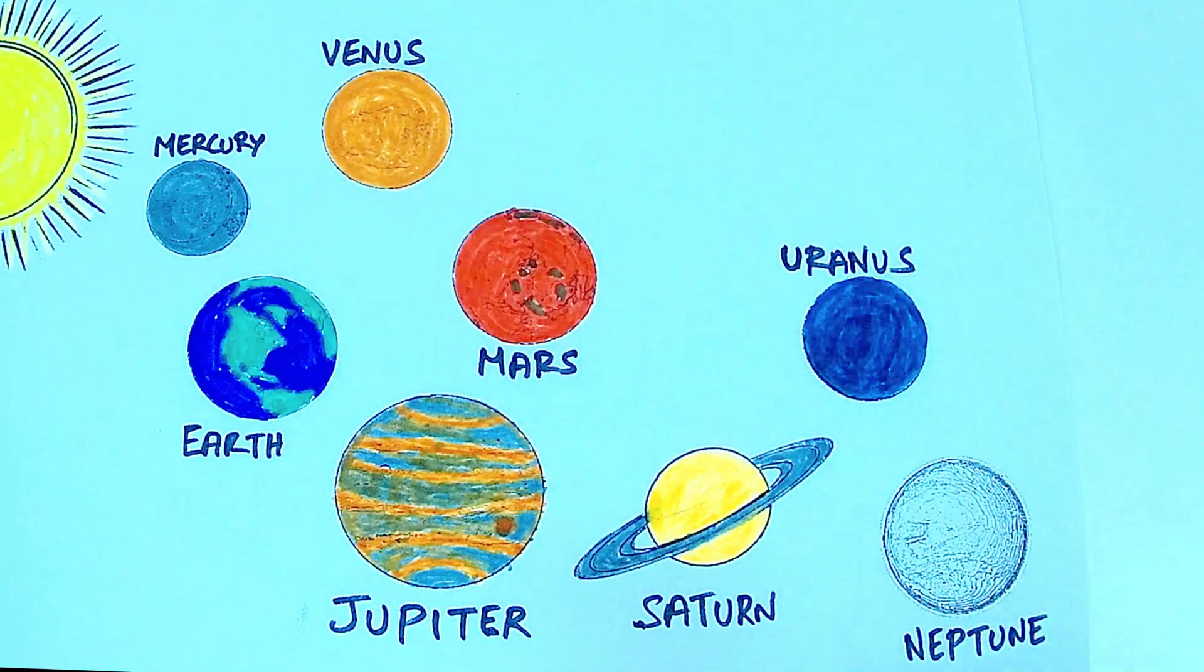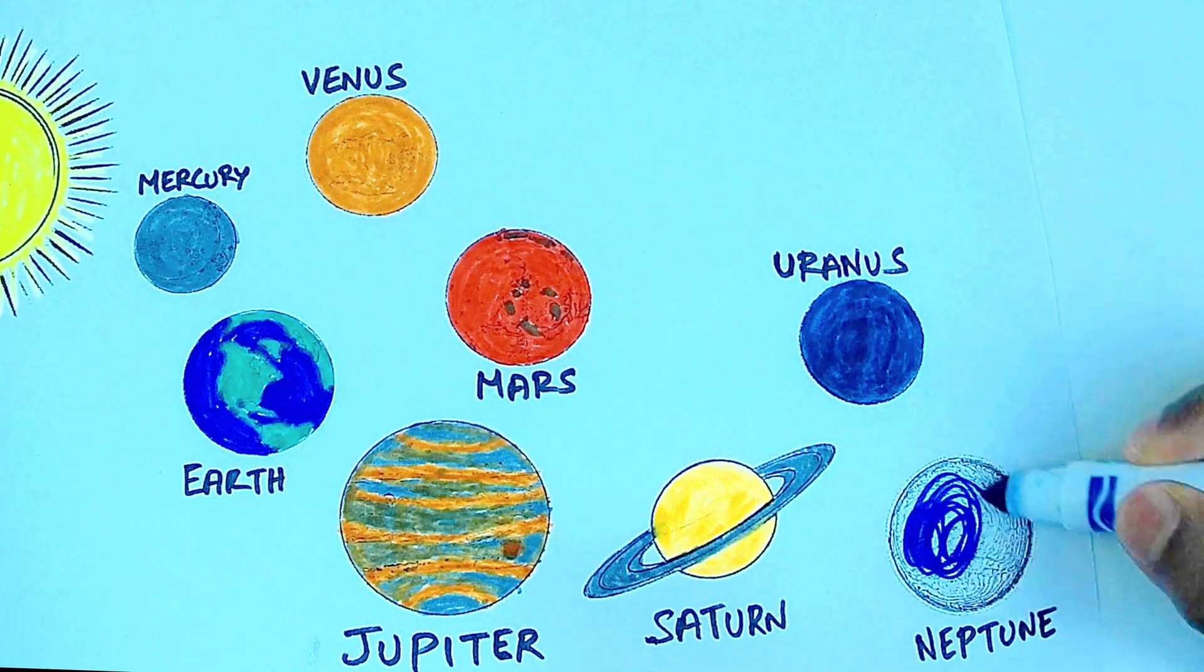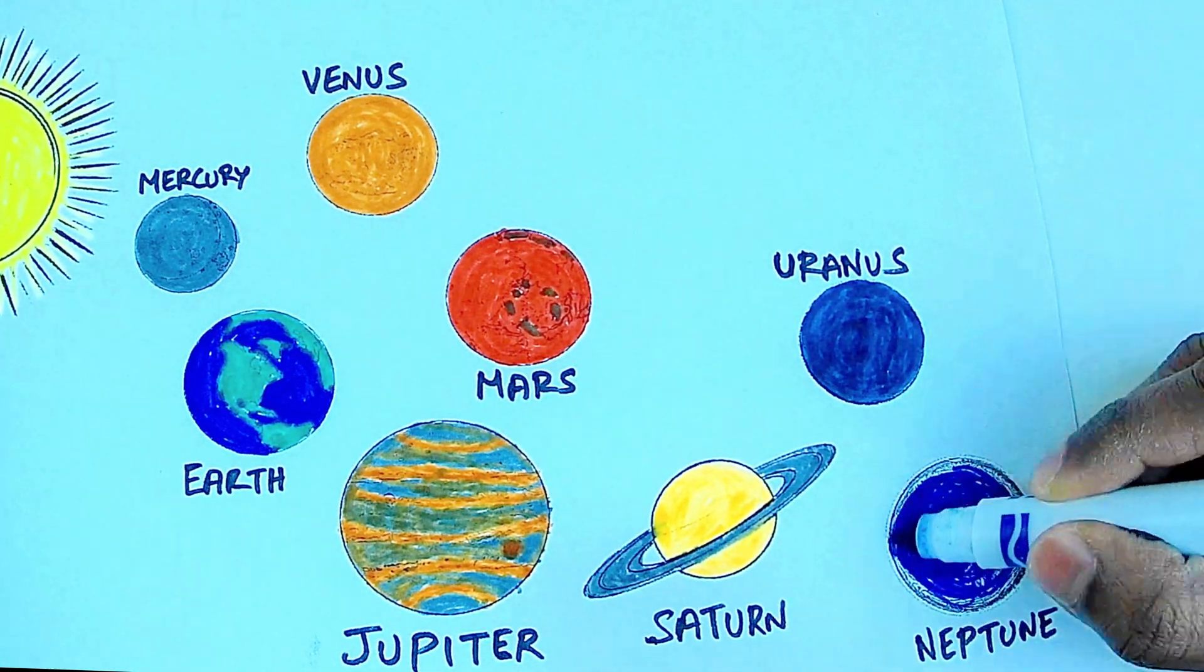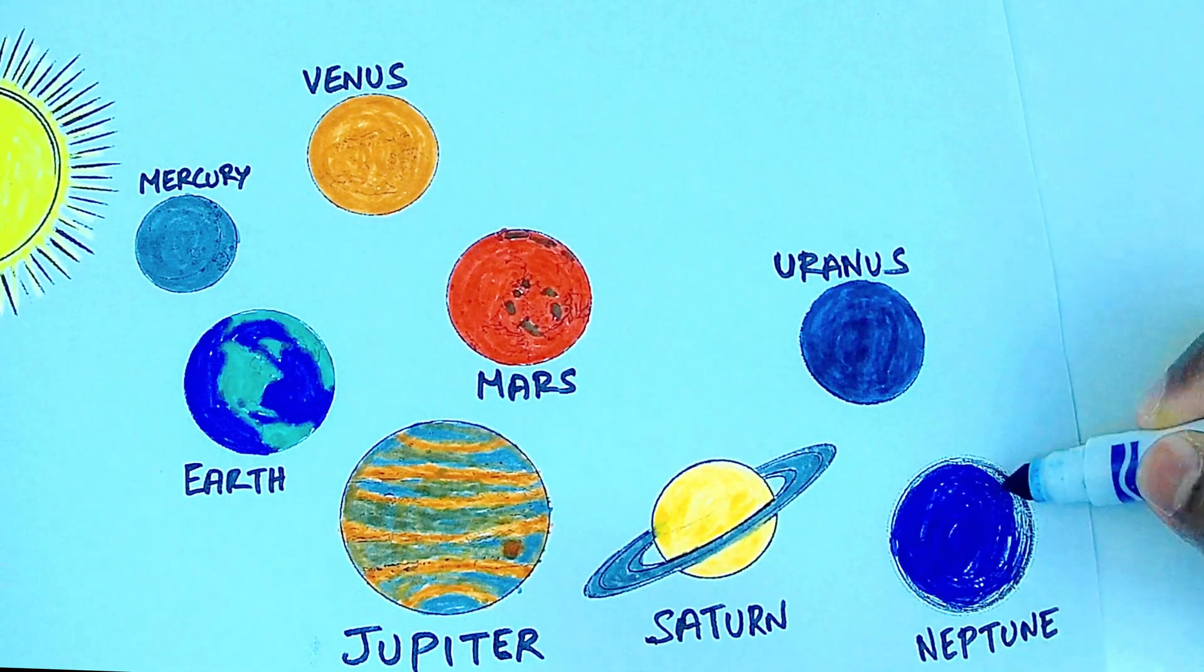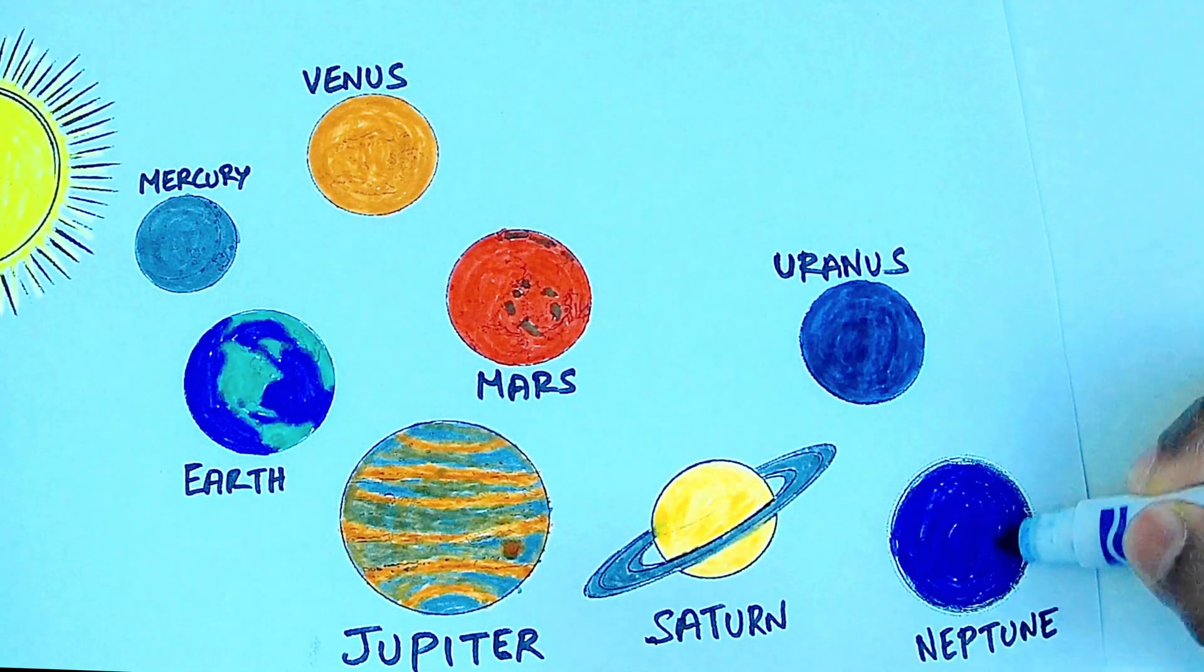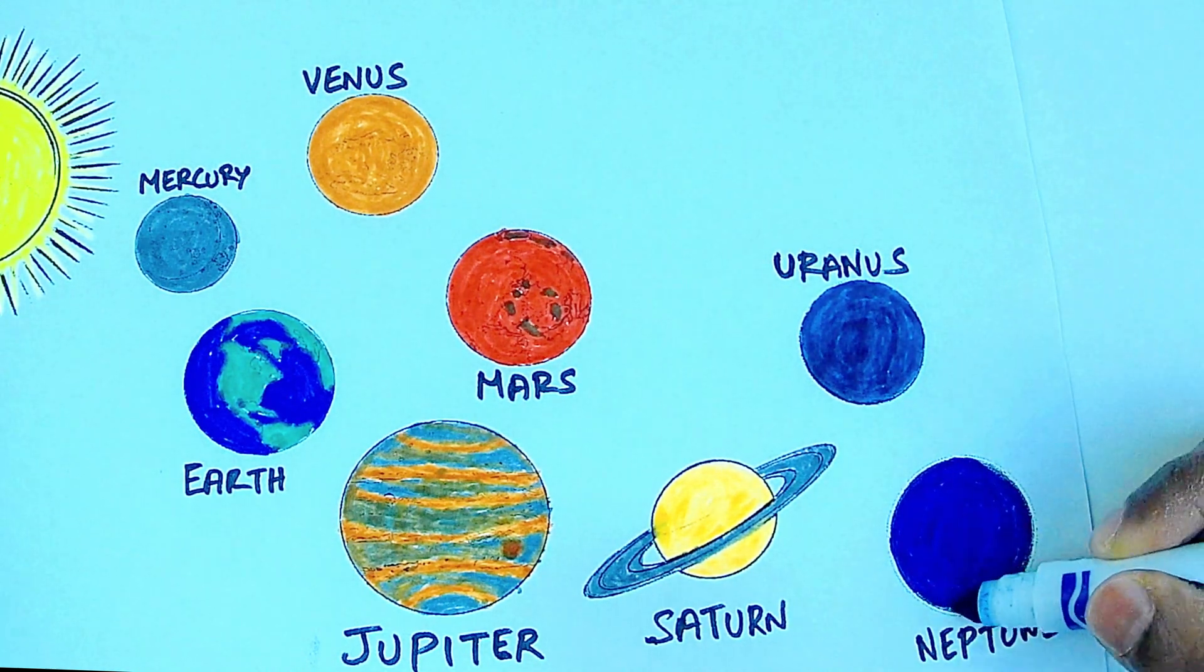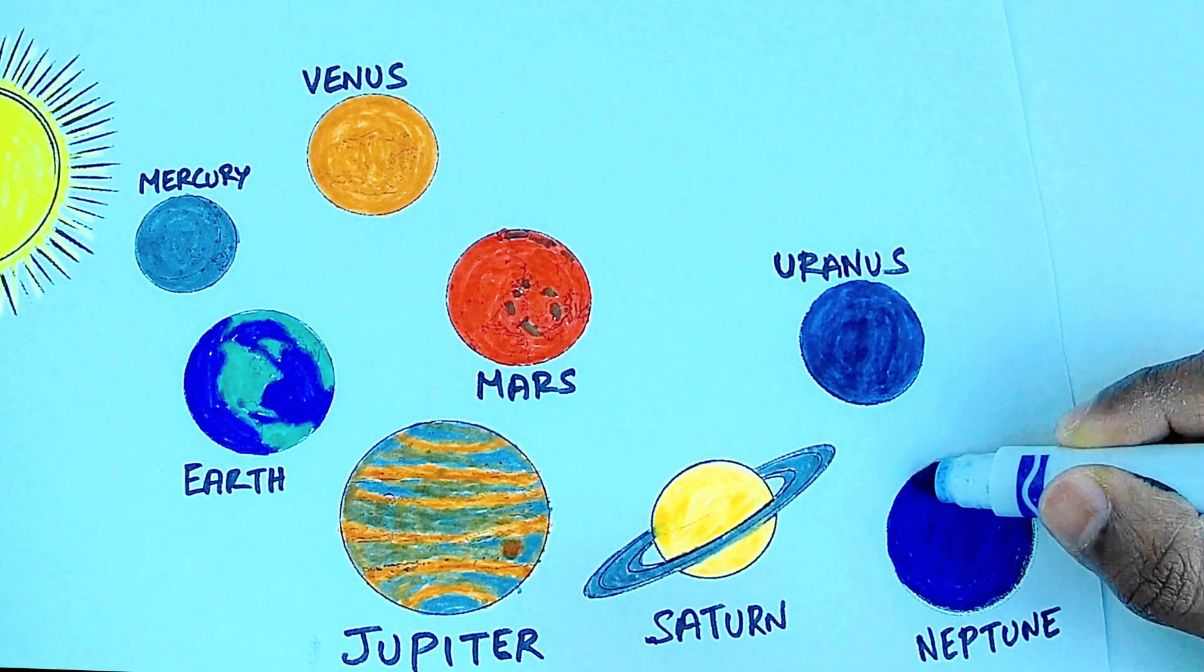Blue color Neptune. Neptune is the blue planet. It is the eighth planet from the Sun. It is the farthest planet in our solar system.